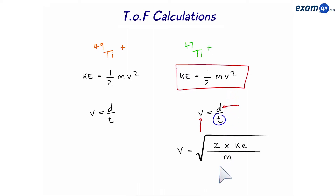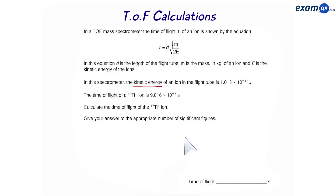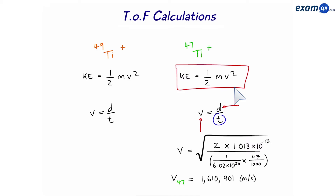After rearranging, velocity equals the square root of 2KE over mass. For mass, we use the equation 1 over Avogadro's constant times Mr over 1000, where Mr is 47. For kinetic energy, the question tells us the kinetic energy of an ion — they don't specify 47 or 49, because all ions have the same kinetic energy. So this kinetic energy applies to both 47 and 49. That gives us the velocity of titanium-47.